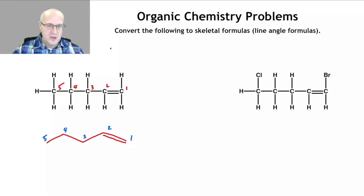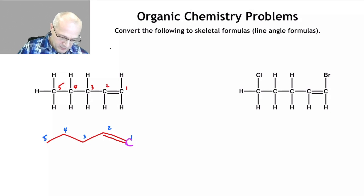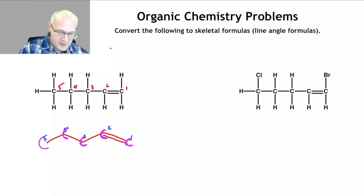I'll do the expanded formula to prove it to you. Remember, where lines terminate or two or more lines come together, that's where the carbons are. So there's a carbon here where the line terminates, a carbon here where two lines come together, two or more lines come together, two or more lines come together, and a line terminates.